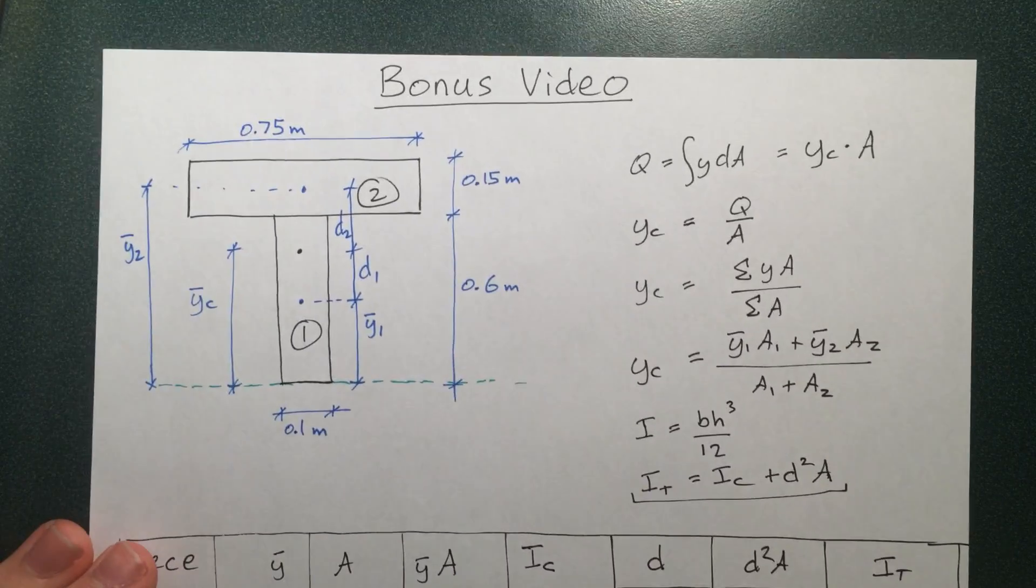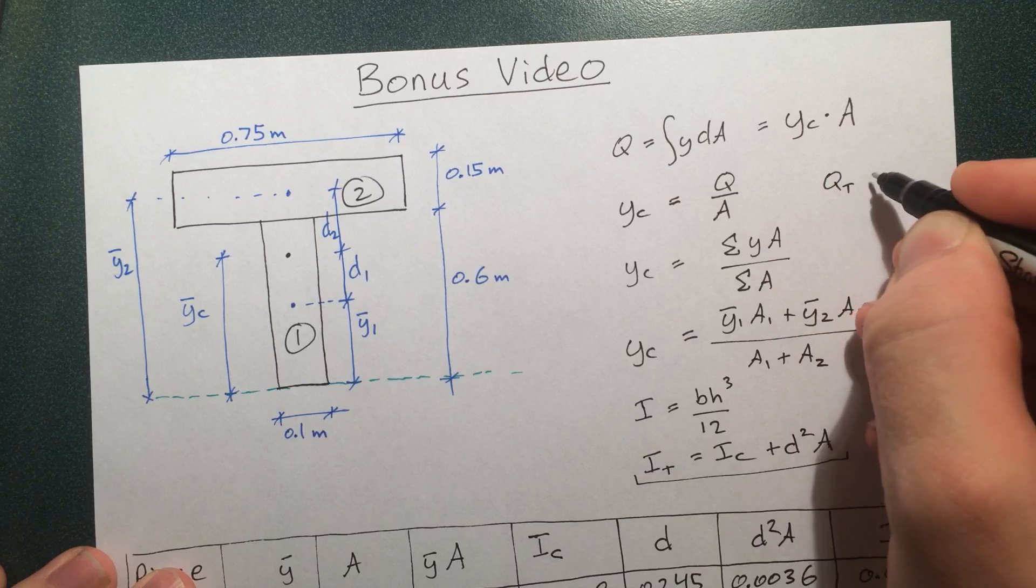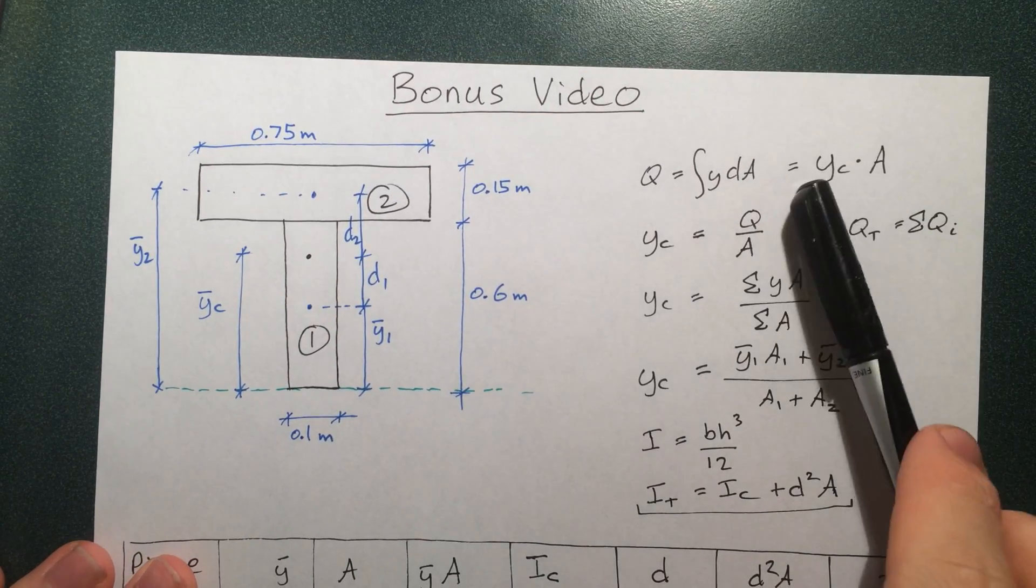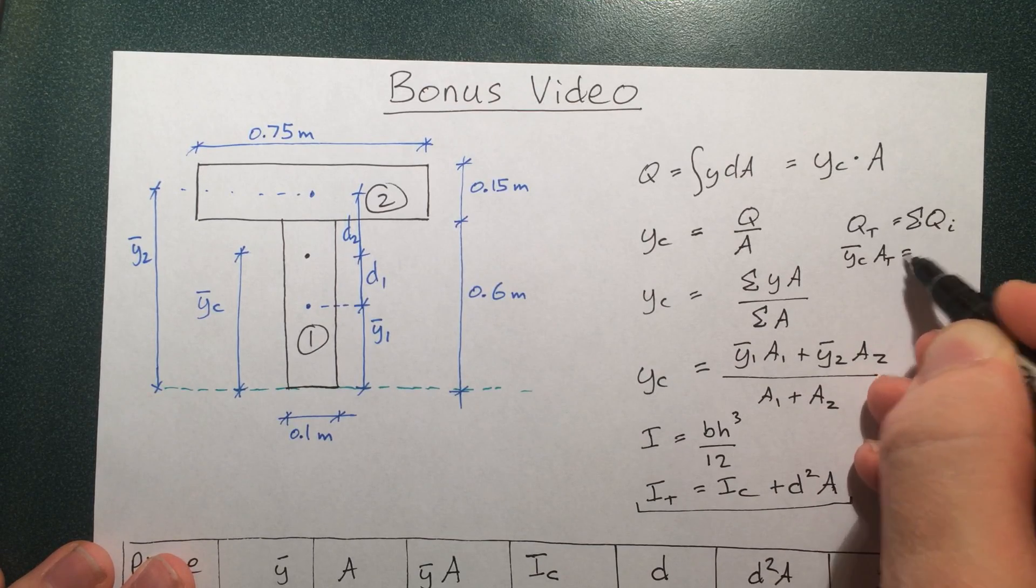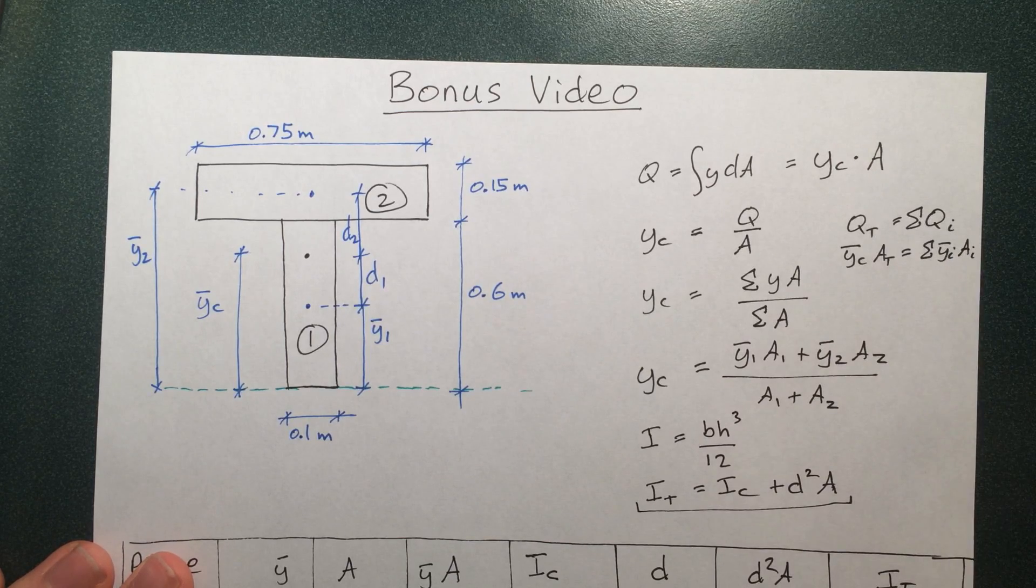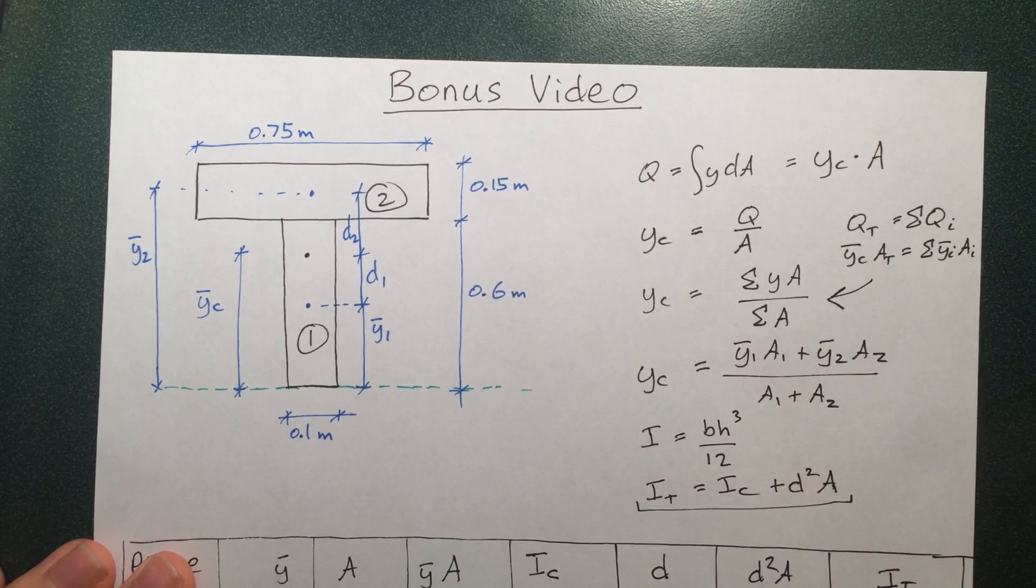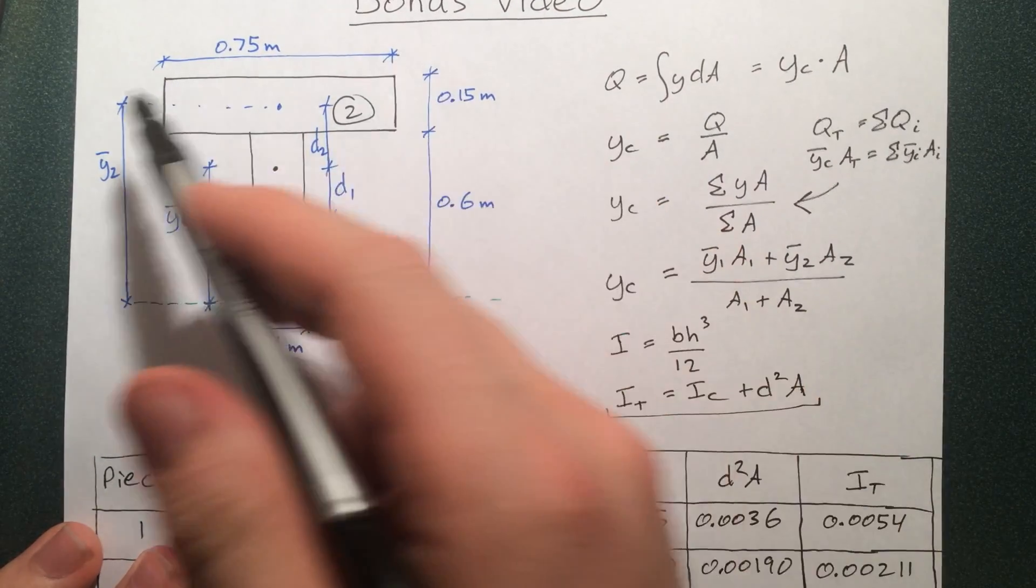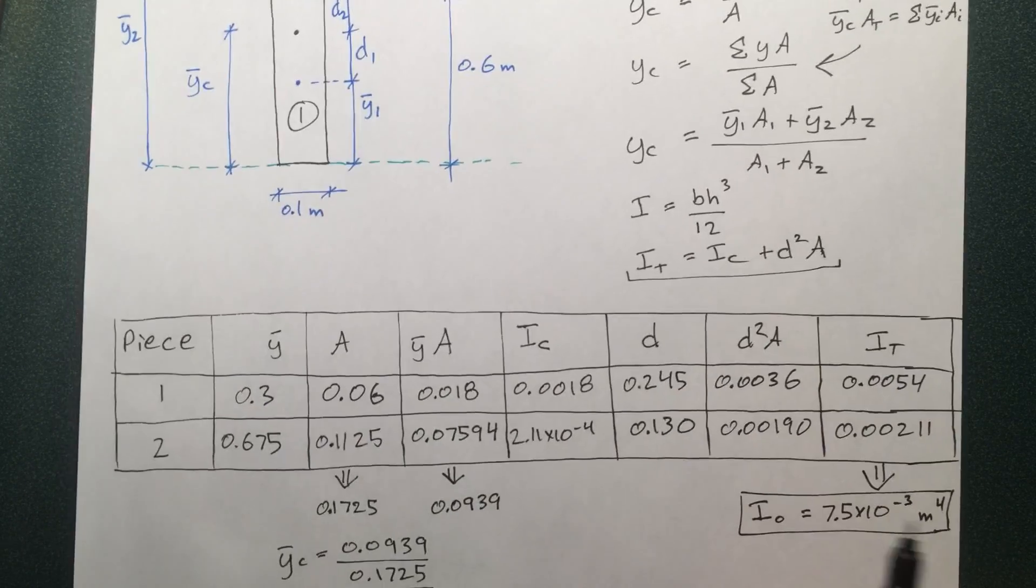To find the centroid, we realize that Q_total is equal to the sum of Q_individual. That has to be true. Q_total, using y_c, is y_c times A—the centroid times the total area—equals the sum of the distance to an individual centroid times the area of an individual piece. To find this, we just divide through by A and get this formula. We can expand that out for our specific piece. It only has two sections that we can break it down into. Now we just move through and solve for each piece using this handy table.